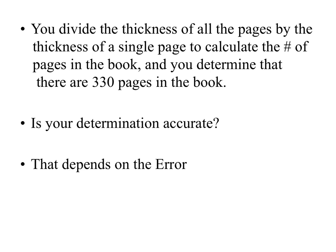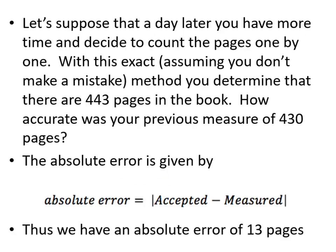Let's say you do that determination and find 430 pages in the book. You can ask: is your determination accurate? Well, that depends on how big the error is. Suppose you come back later, count them one by one, and determine there are 443 pages. Previously your quick measurement gave 430, but the actual number is 443.